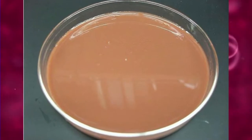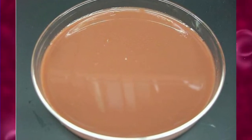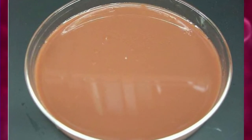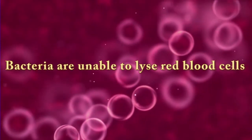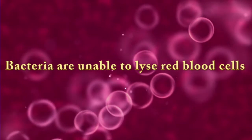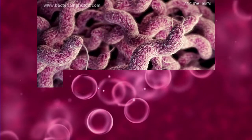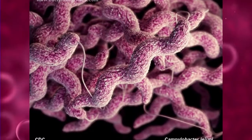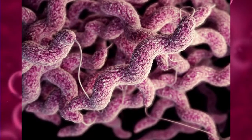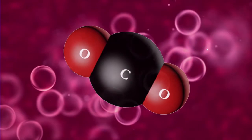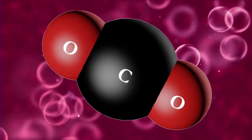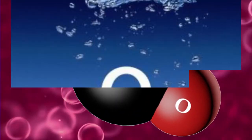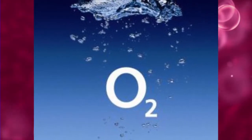Neisseria gonorrhoeae requires hemolysed blood because the bacteria are unable to lyse red blood cells and release nutrients on their own. Campylobacter species require elevated carbon dioxide and are microaerophilic bacteria, which require a small amount of oxygen — such as 2 to 10 percent — to grow.